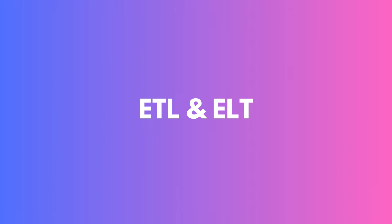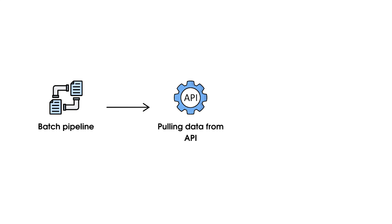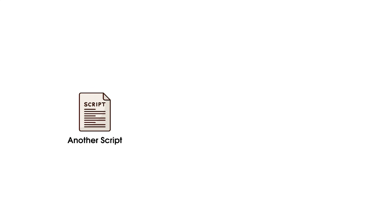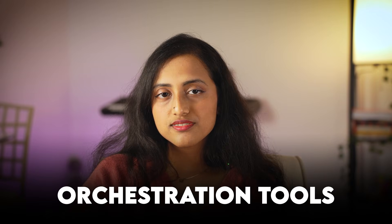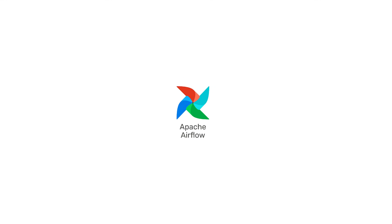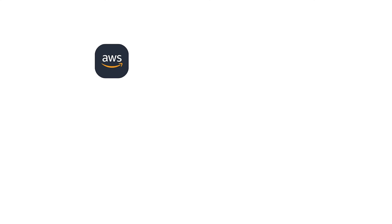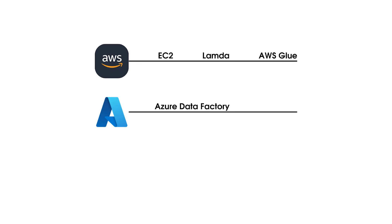Moving on to ETL and ELT. Say you have a batch pipeline pulling data from an API and storing it in a database, and another script that conducts analysis on that stored data. You want to run these sequentially — first pull the data, store it, then run the second script. This is where orchestration tools come in. Orchestration allows you to run multiple scripts one after another in any order you desire. The most popular open source orchestration tool dominating the industry right now is Airflow. Cloud platforms have their own versions — AWS has EC2, Lambda, and AWS Glue; Azure has Azure Data Factory; and GCP has GCS and Dataflow.